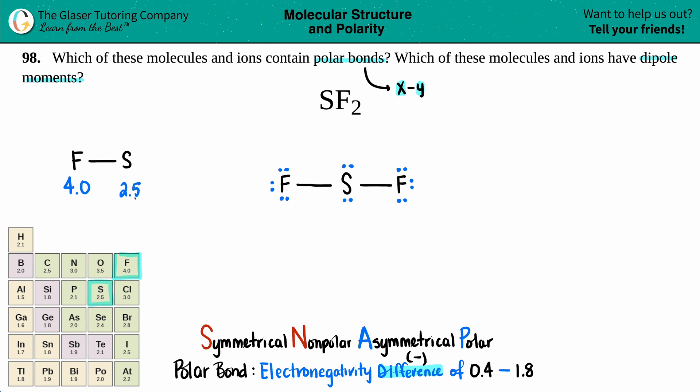Now for your electronegativity differences, my suggestion is to take the higher number and subtract by the lower number because those differences, you can't have a negative. So if you do the lower number minus the bigger number, you'll get a negative. But just know that your electronegativity differences are always the absolute value, which is positive. So I'm going to take my 4.0 minus it from my 2.5 and I get a 1.5 as my answer.